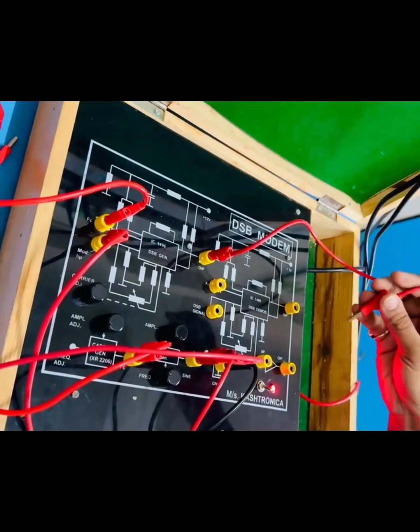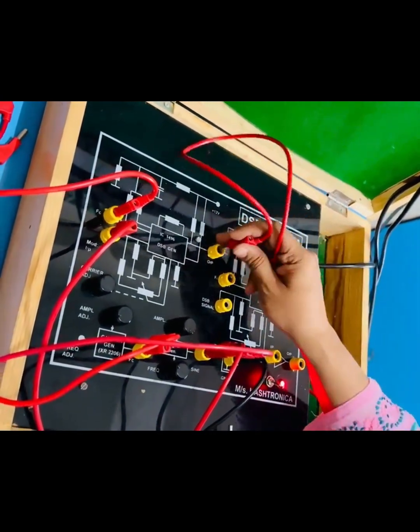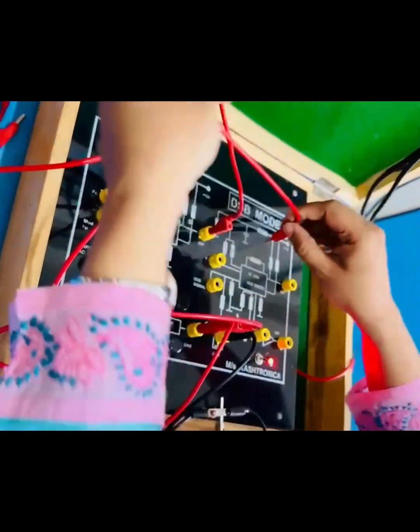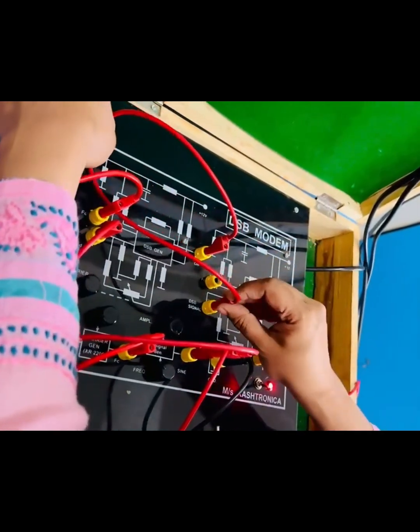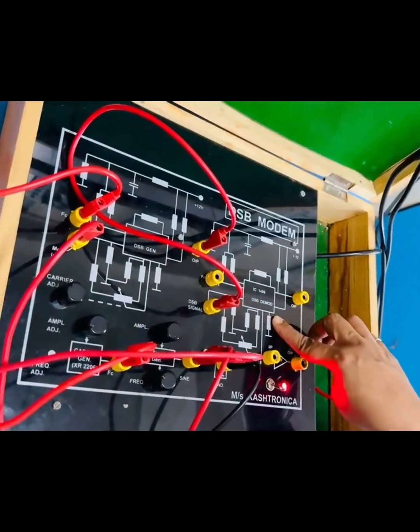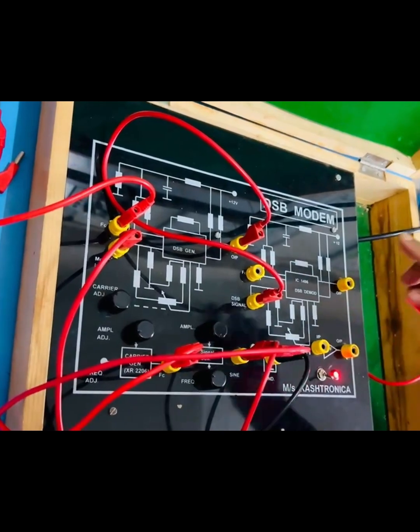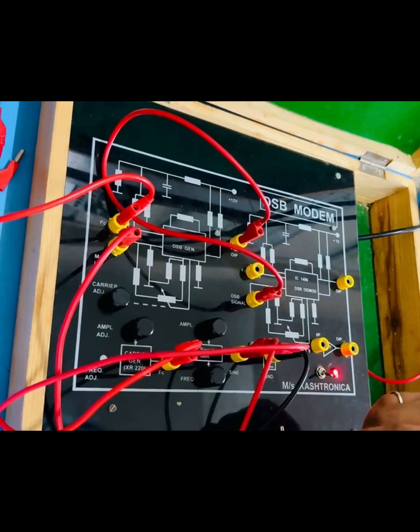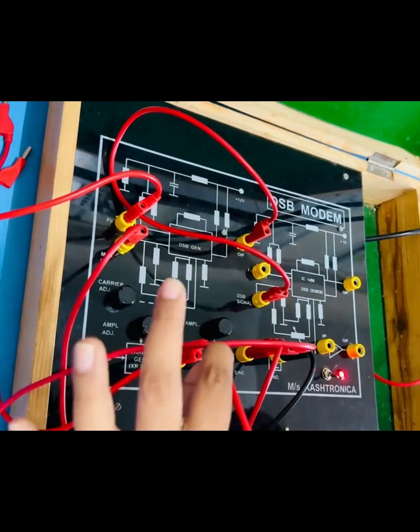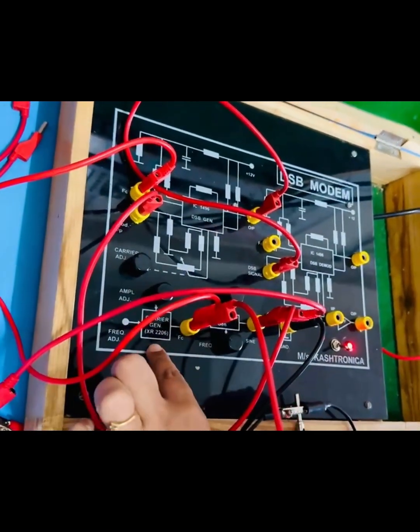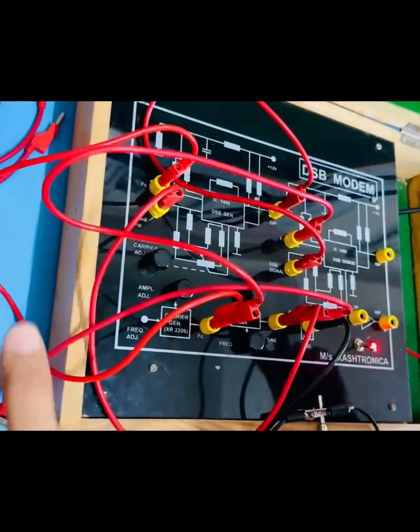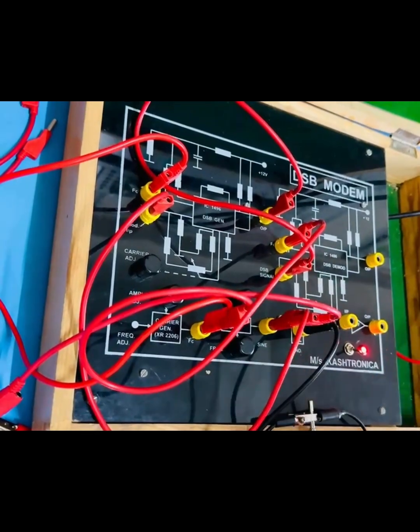Now let us see how the demodulation works. The output of modulated signal is given to the DSB signal input of the DSB demodulator circuit. This is called coherent detection or coherent demodulation technique, which needs the same carrier used on the transmitter side to be given to the receiver side, so that the demodulated signal will be same as that of the modulating signal.